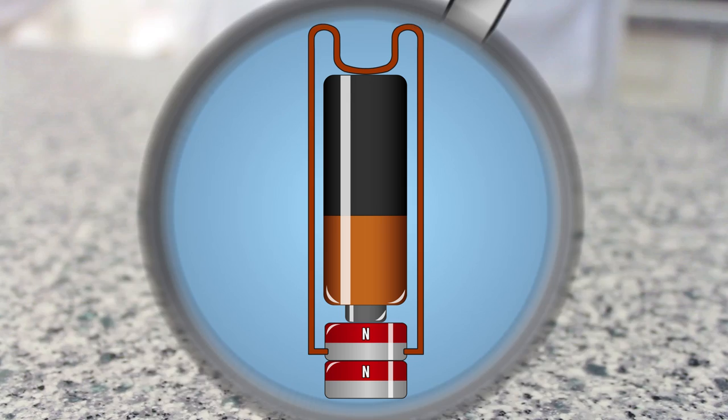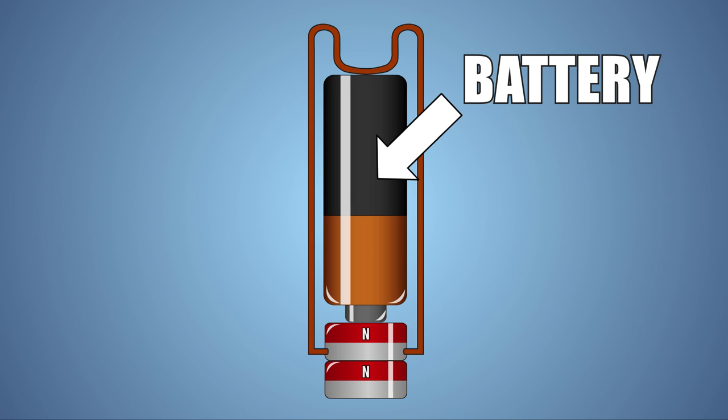Let's look at this experiment a little closer. There are three main components to our motor. The battery, which is the source of the electrical current and electrons that power the motor.